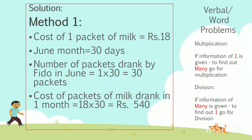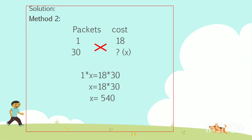Cost of packets of milk drank in one month is the cost of one packet multiplied by the number of packets drank by Fido in June. So, 18 multiplied by 30 gives us 540 rupees. We can also solve this in another method: if one packet of milk costs 18 rupees, then 30 packets cost how much? Let X be the cost. After cross multiplication, 1 multiplied by X equals 18 multiplied by 30, so X equals 540 rupees.